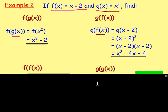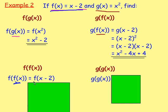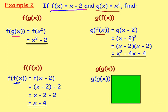You can also work out f(f(x)) and g(g(x)). For f(f(x)), start in the middle: f(x) = x − 2. You cannot simplify x − 2, so you want f(x − 2). In function f, replace x with (x − 2): you get (x − 2) − 2. Removing the brackets gives x − 2 − 2, which simplifies to x − 4.